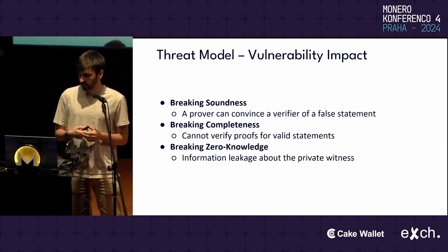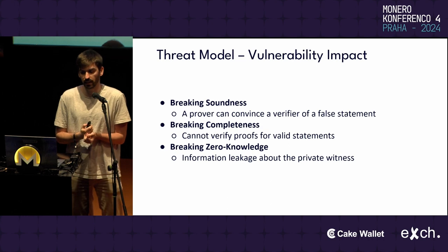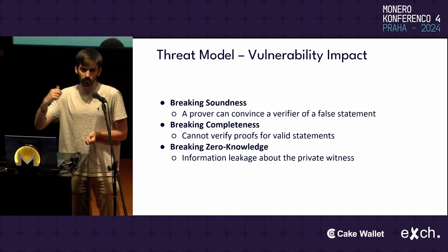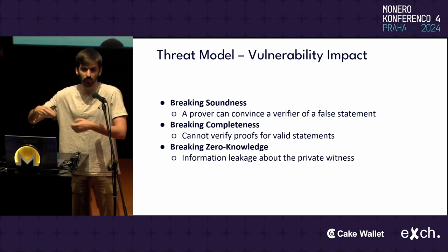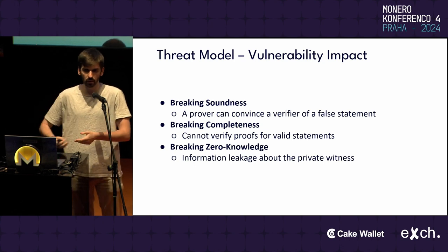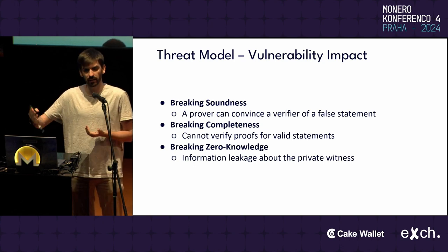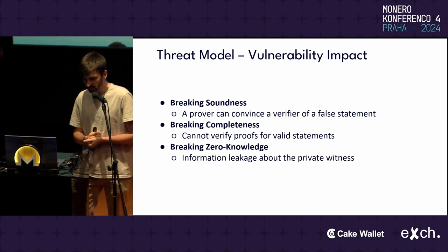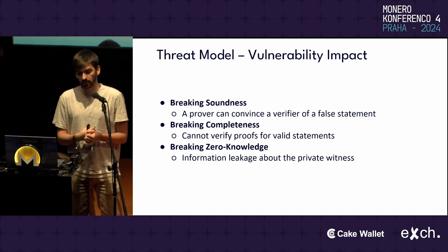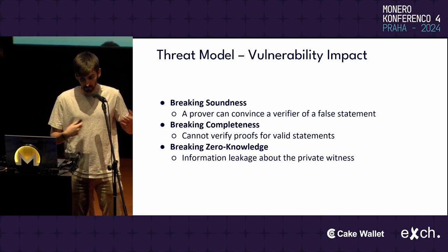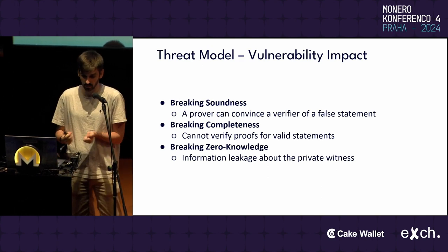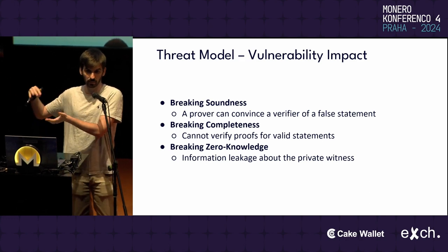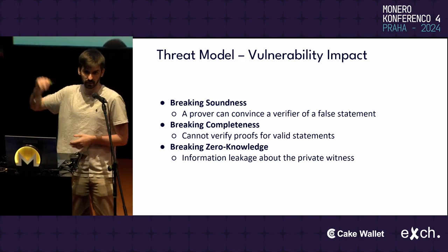Then we have breaking of completeness, which means we either cannot produce a valid proof for some valid statement, or the verifier will reject some valid proofs. And finally, we can have breaking of zero-knowledge, which means there is information leakage about the private parts of the trace.